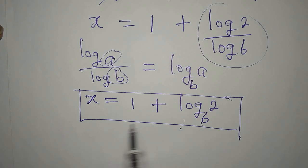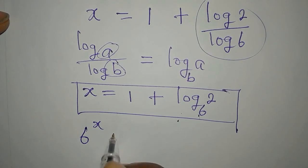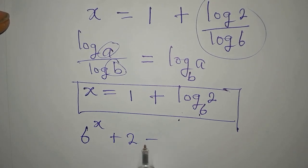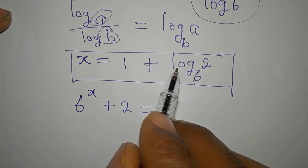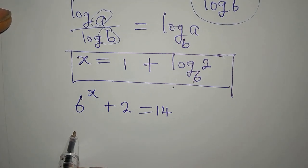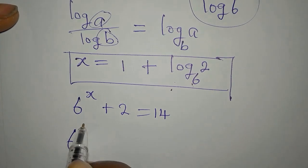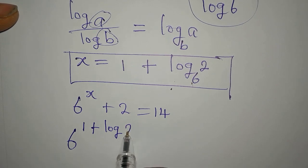Now, let's put this back into the equation. The equation is 6 to the power of x plus 2 equals 14. In place of x, I'm going to write this. So I will be having 6 to the power of 1 plus log 2 to base 6.